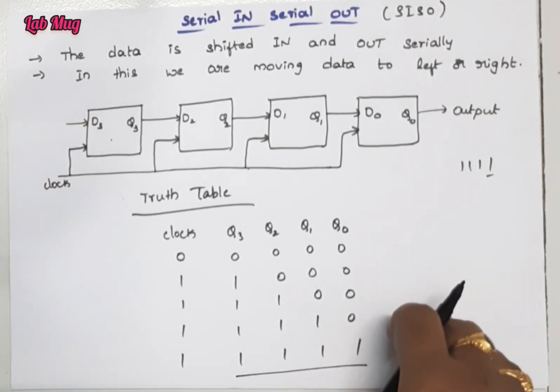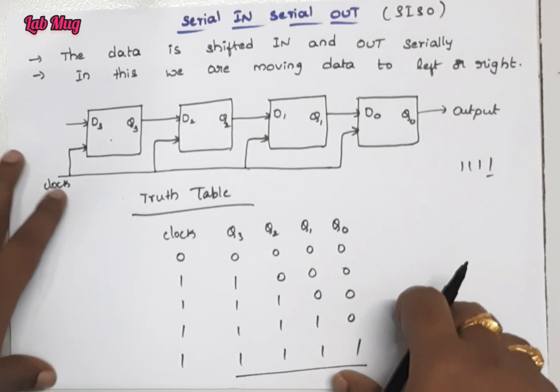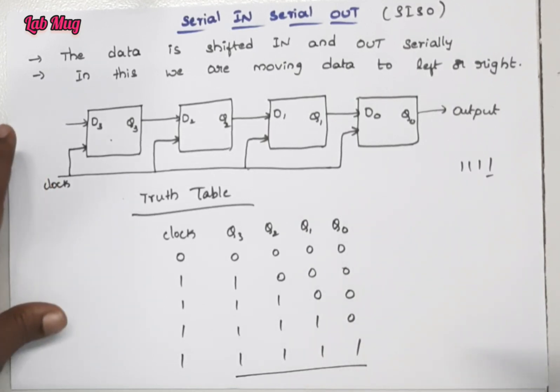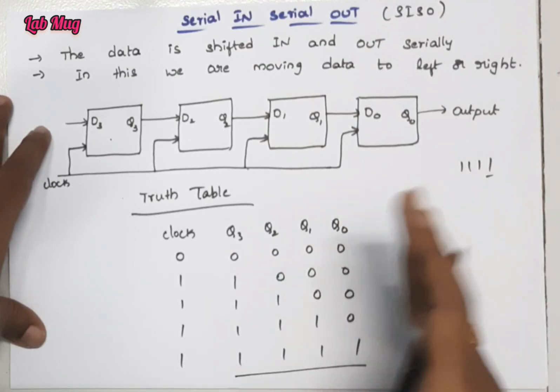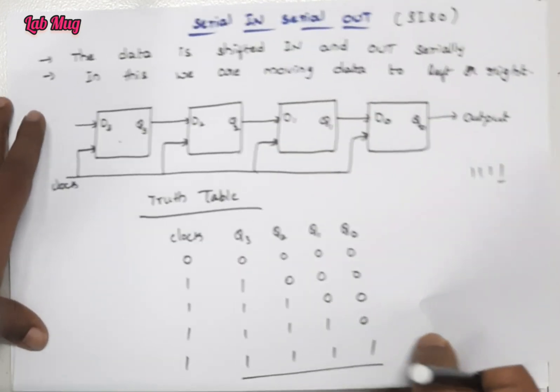Again the clock value is one, so we get one one one one. Here the output finally we are getting the four ones. In serial in serial out, we take four bits and can store them as an extra four bits in an eight-bit pattern. That is a small advantage.